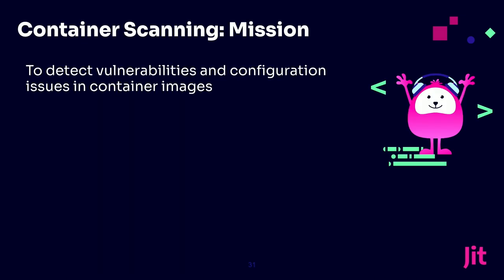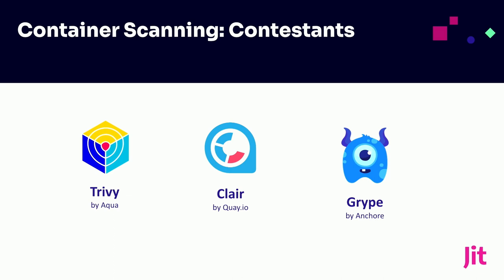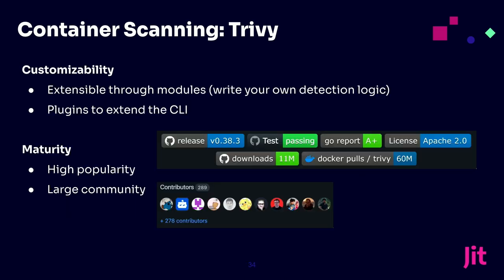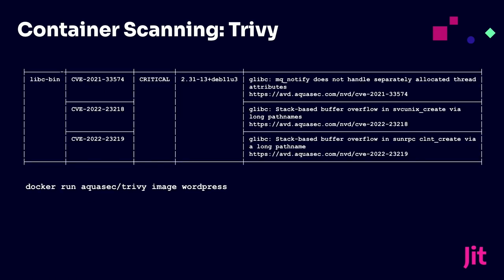For container scanning — detecting vulnerabilities and configuration issues in our container images — we looked at Trivy, Clair, and Grype. We chose Trivy. We like the fact that it supports scanning container images across many different types, and it can generate an SBOM, which was helpful. From a developer experience perspective, it's super simple to set up, runs anywhere, and scans don't take long. From a customizability perspective, it's very extensible — you can write your own logic and plugins right into the CLI. It's highly popular with a large community. Here's a quick example of results from Trivy showing CVEs tied to specific risk rankings and what vulnerability was detected.